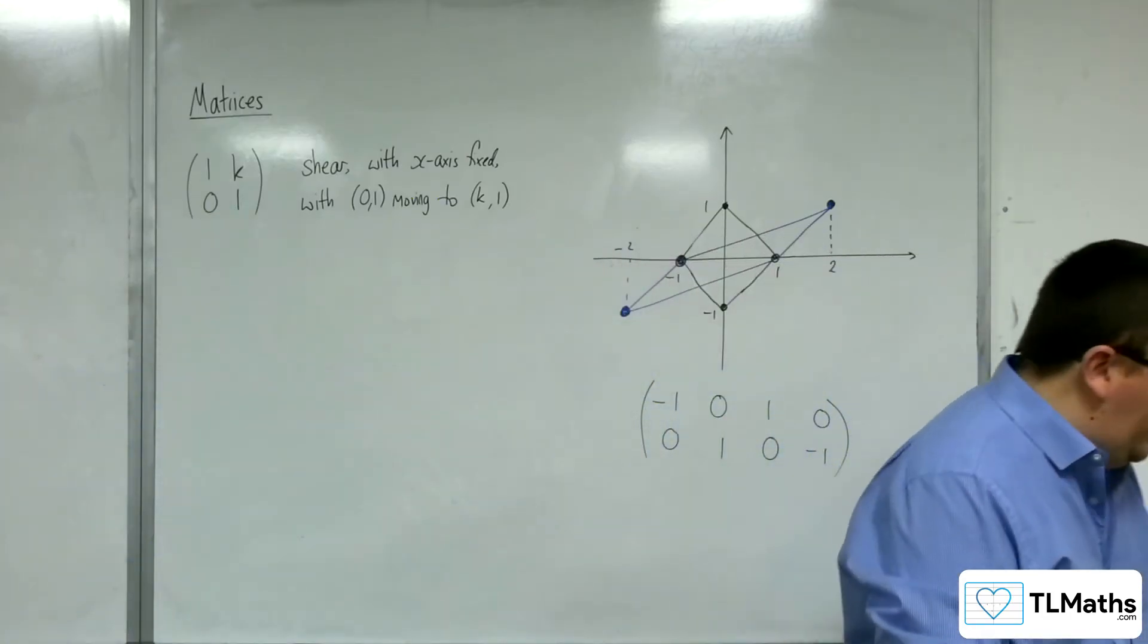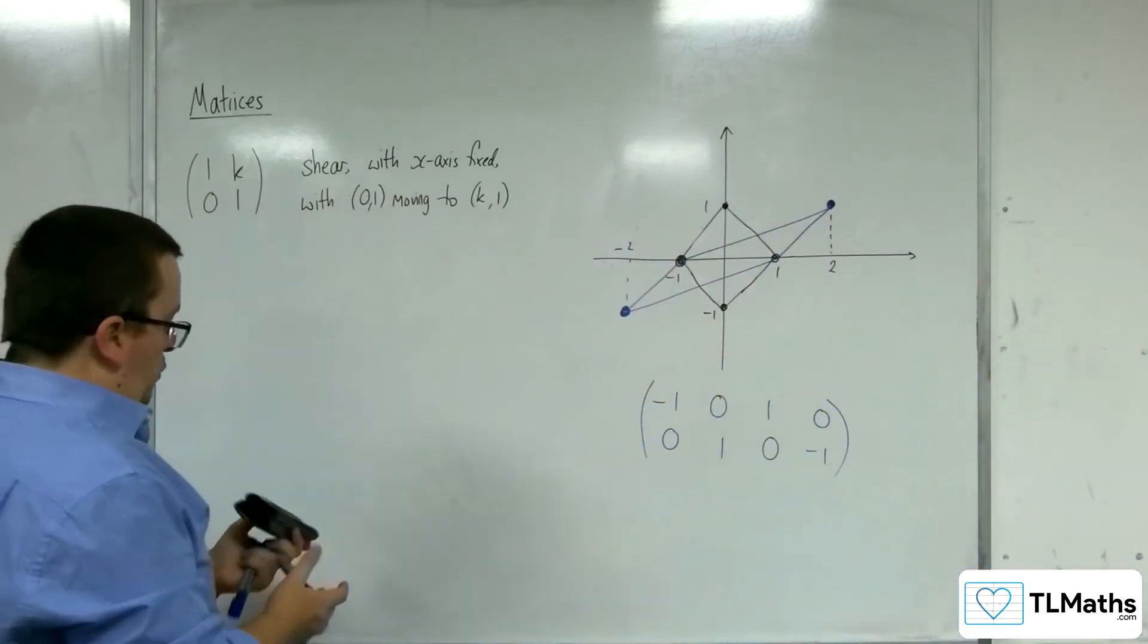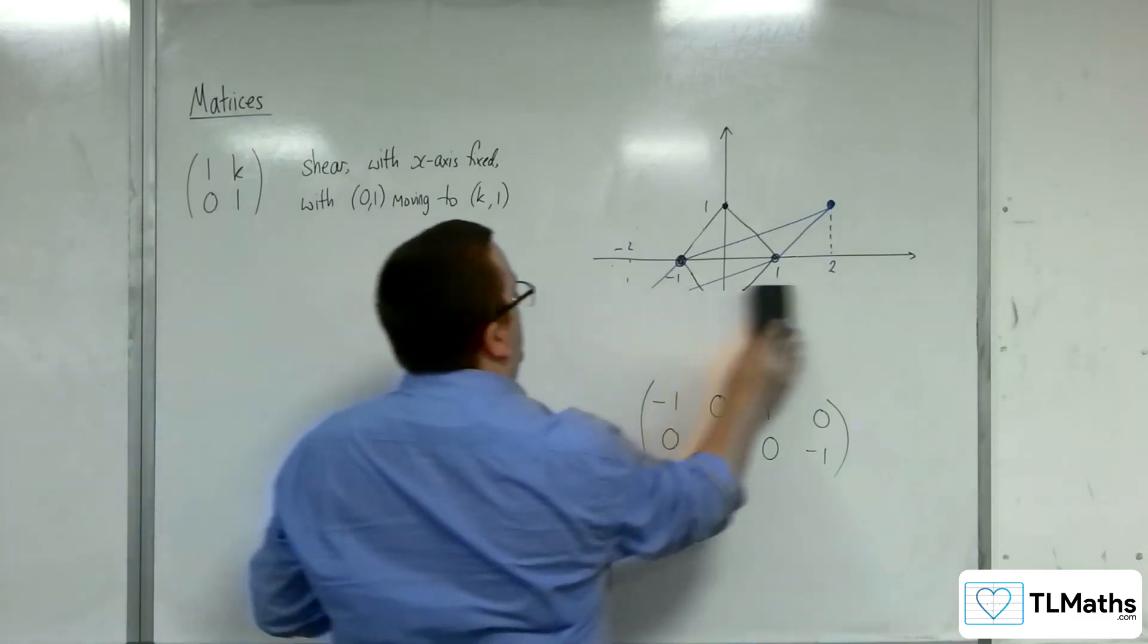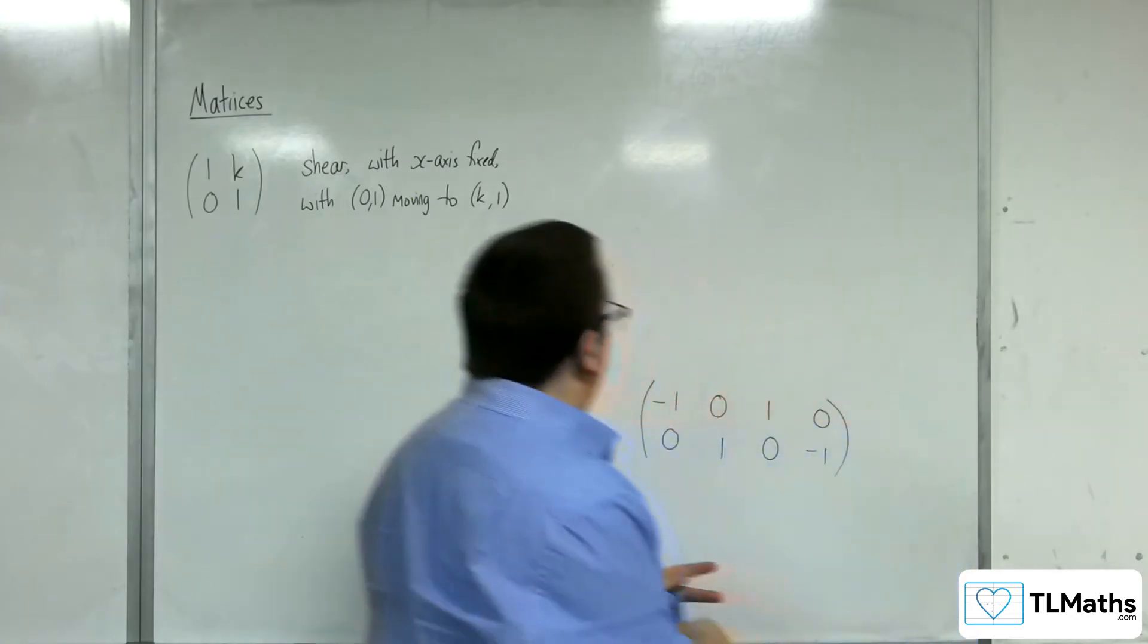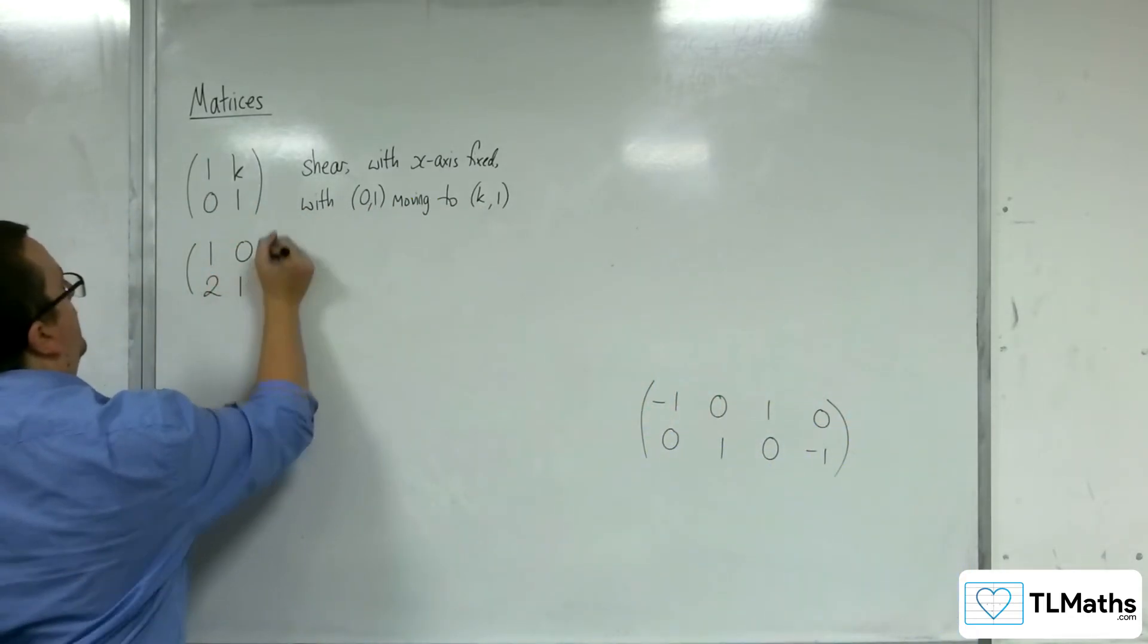So what we're going to be looking at next is just seeing what happens if we... So I'm going to have to erase that and just do another one, I think. But we're going to have a look at 1, 0, 2, 1 next.